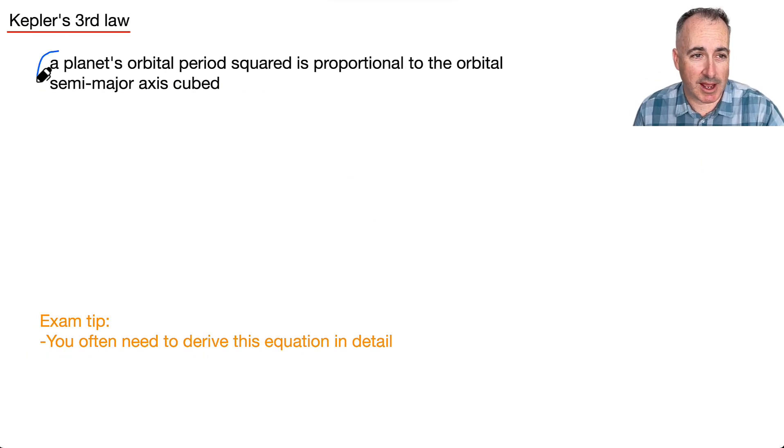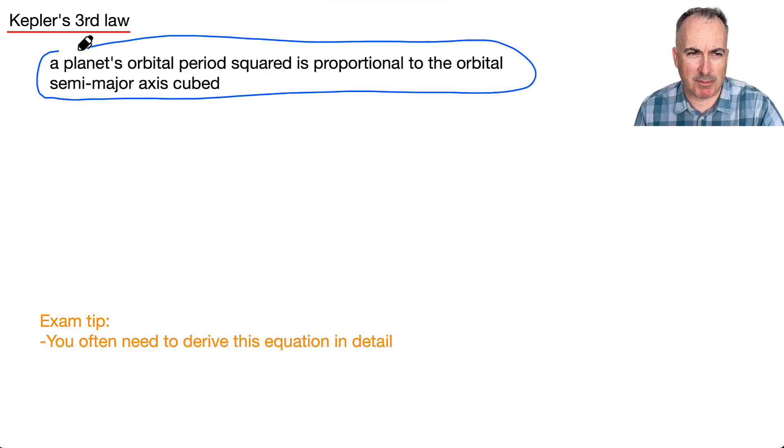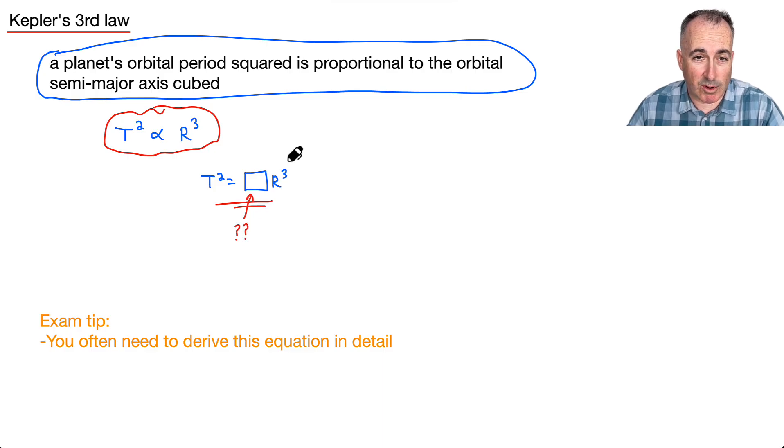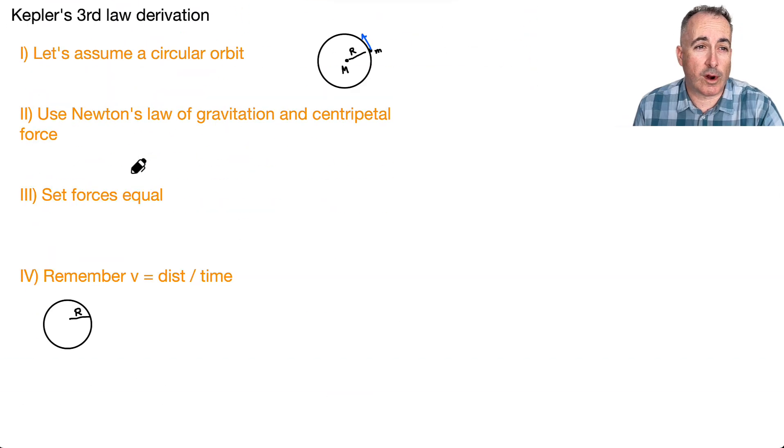Kepler's third law is this: a planet's orbital period squared is proportional to the orbital semi-major axis cubed. What? Well, this is for real ellipses. The key that you really need to know is T squared is proportional to R cubed. If we assume these are circular, it's much easier. On exams, you often need to derive this equation in detail. You might be worried, but don't worry, because on the next slide we're going to learn how to do it.